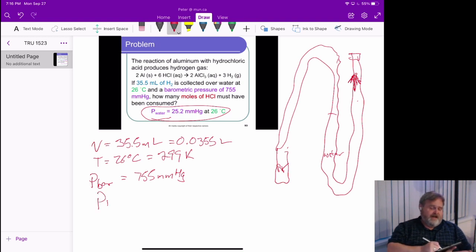But since we're only interested in the hydrogen gas from the reaction, that water had nothing to do with the reaction. We've got to get it out of the way. 755 millimeters of mercury, from that we are going to subtract our 25.2 millimeters of mercury.